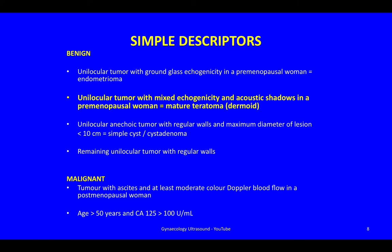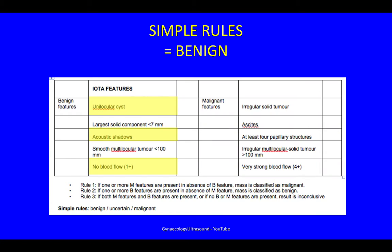Looking at simple descriptors, it fits one of the benign ones. It's a unilocular tumour with mixed echogenicity, acoustic shadows in a premenopausal woman — that would be a mature teratoma or a dermoid. If you don't think that fits, then using simple rules, there are three benign features: it was unilocular, there was shadowing, and no blood flow. In the absence of any malignant features, this would be benign.